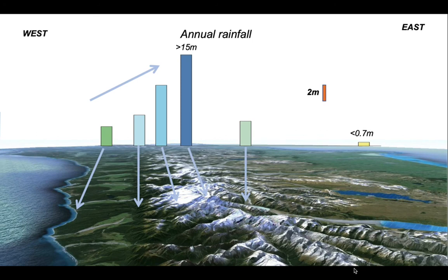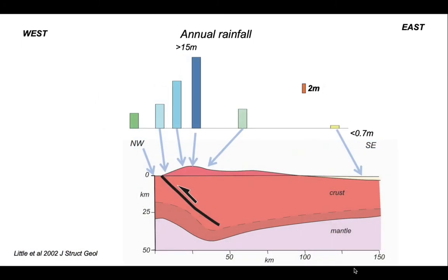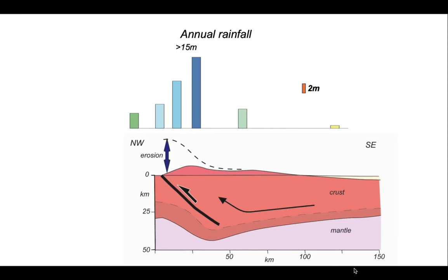So, asymmetric rainfall. Here's how the rainfall maps onto a crustal cross section through South Island New Zealand. You can see the Alpine fault there — a northwest-directed thrust — and the topography of the Southern Alps. The erosion is strongly asymmetric, in response to this difference in annual rainfall across the island. The Southern Alps are attracting more rainfall, and that rainfall is driving erosion. But it also drives the deformation.